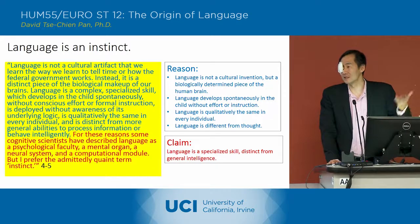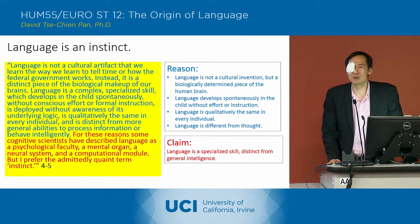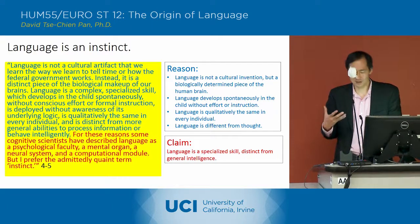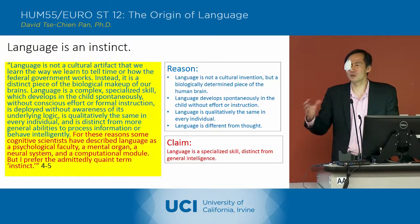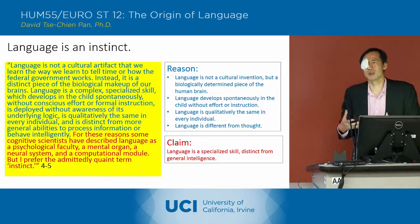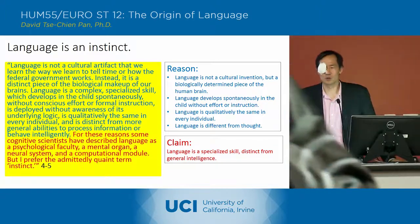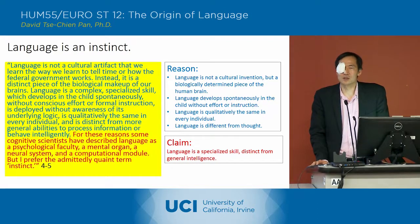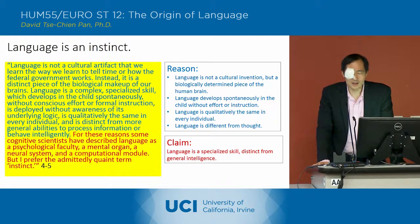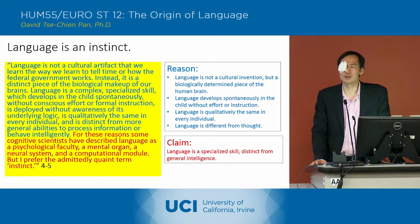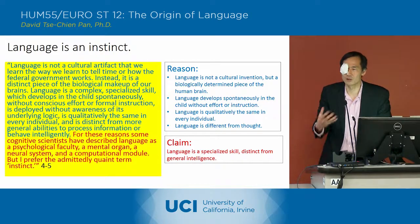The main thesis — in the title — is that language is an instinct, which is to say it's a very specialized skill that's different from general intelligence in the human mind, and that it's located in a particular language module in the brain. His main reasons are that language is not a cultural invention but rather a biologically determined piece of the brain — not something taught and passed down, but something that comes out of the brain itself.